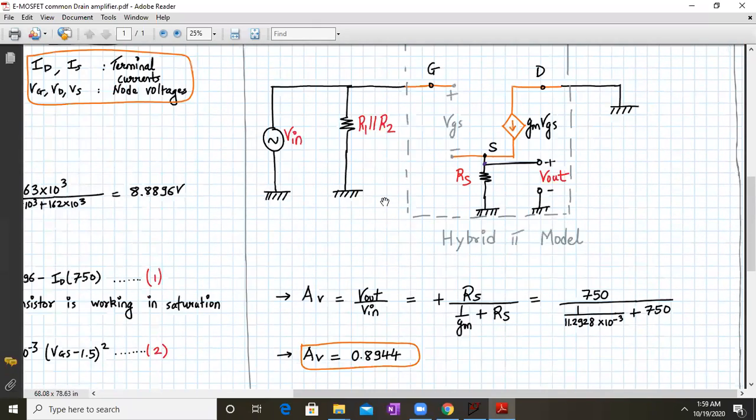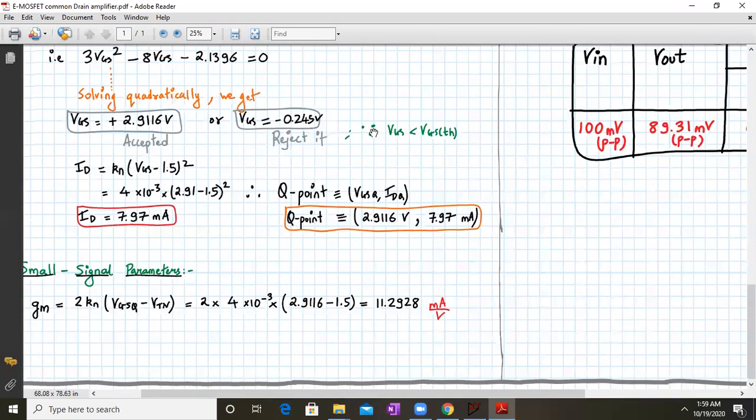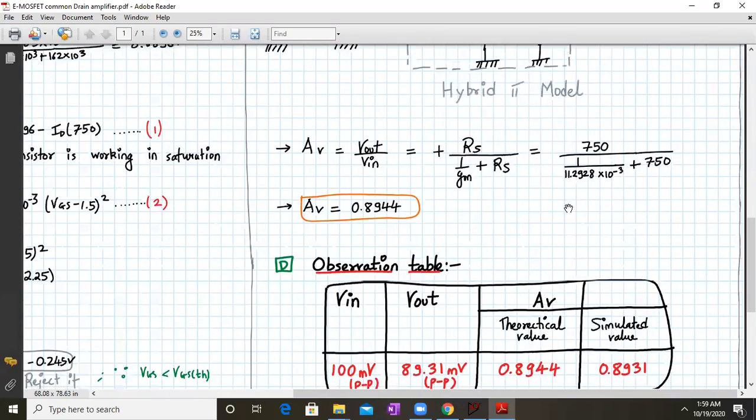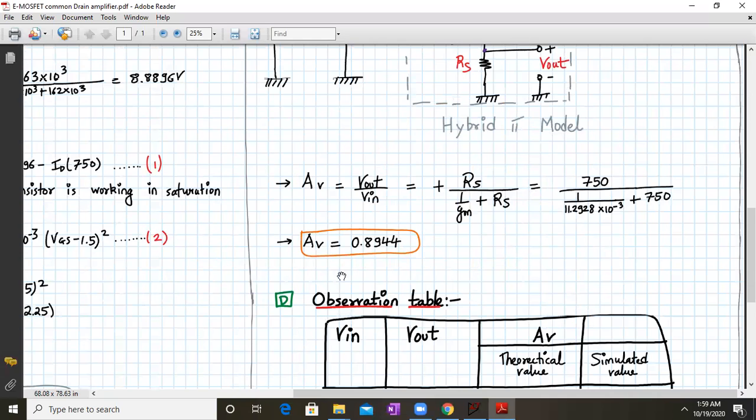We need to determine the expression for Vout/Vin. Using the formula directly, Av = Vout/Vin equals Rs divided by (Rs + 1/gm). Substituting the values - Rs = 750 ohms and gm = 11.2928 - we get Av = 0.899, which is a unitless quantity.